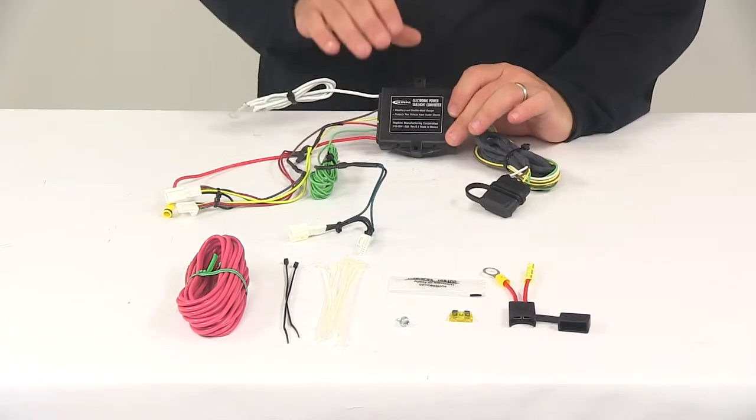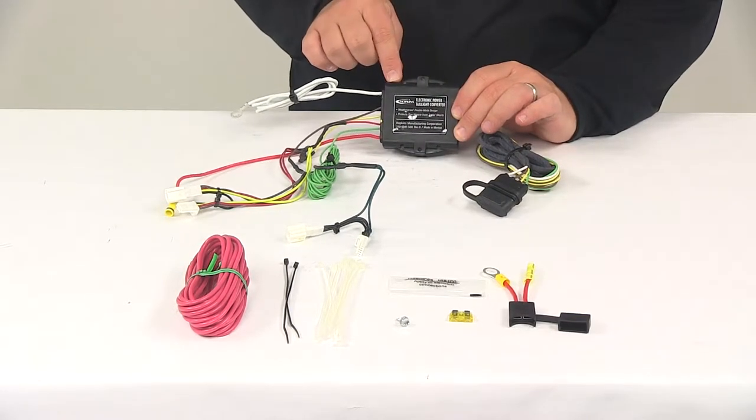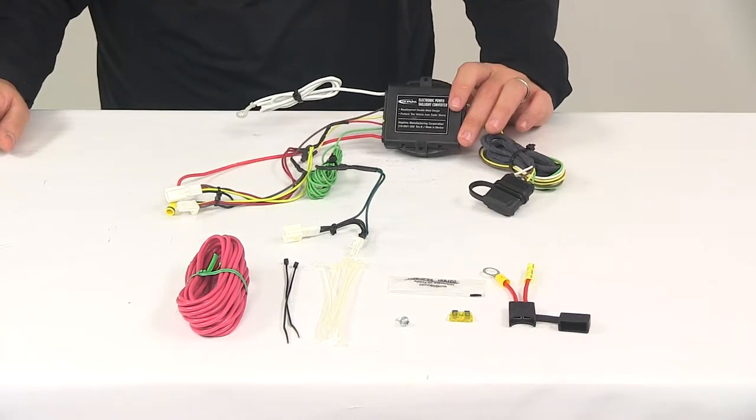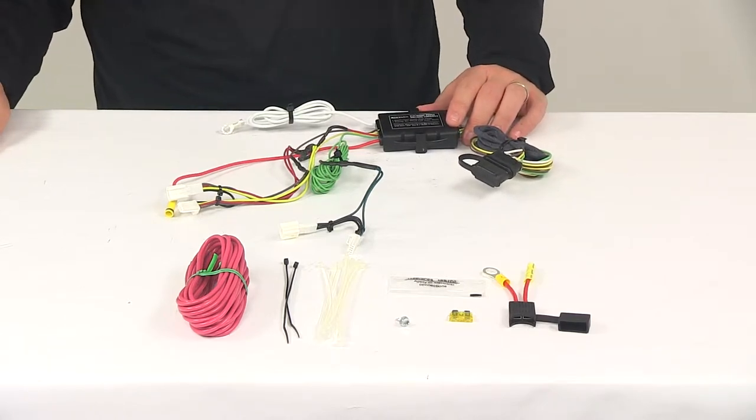It's going to also include a tail light converter to ensure that your vehicle's wiring matches out of your trailers. The powered module connects directly to the vehicle battery through the wiring to avoid overloading the vehicle's electrical system.